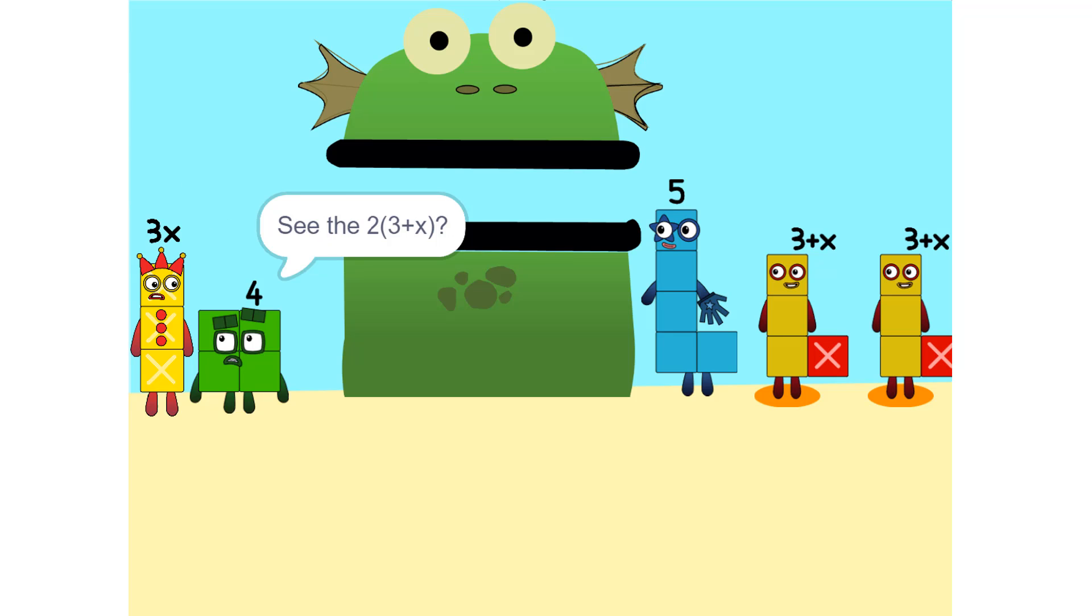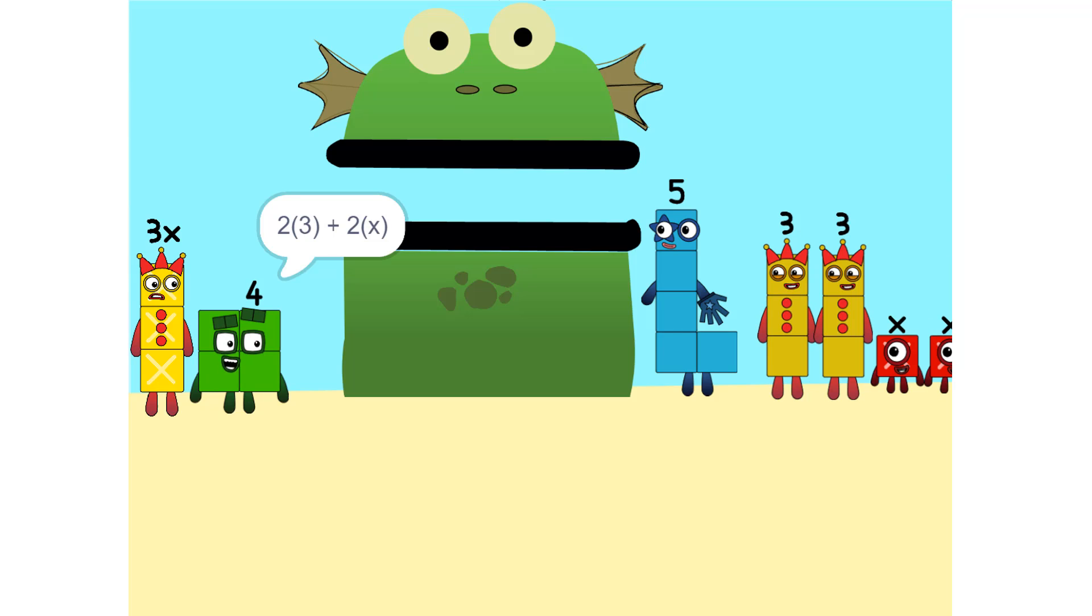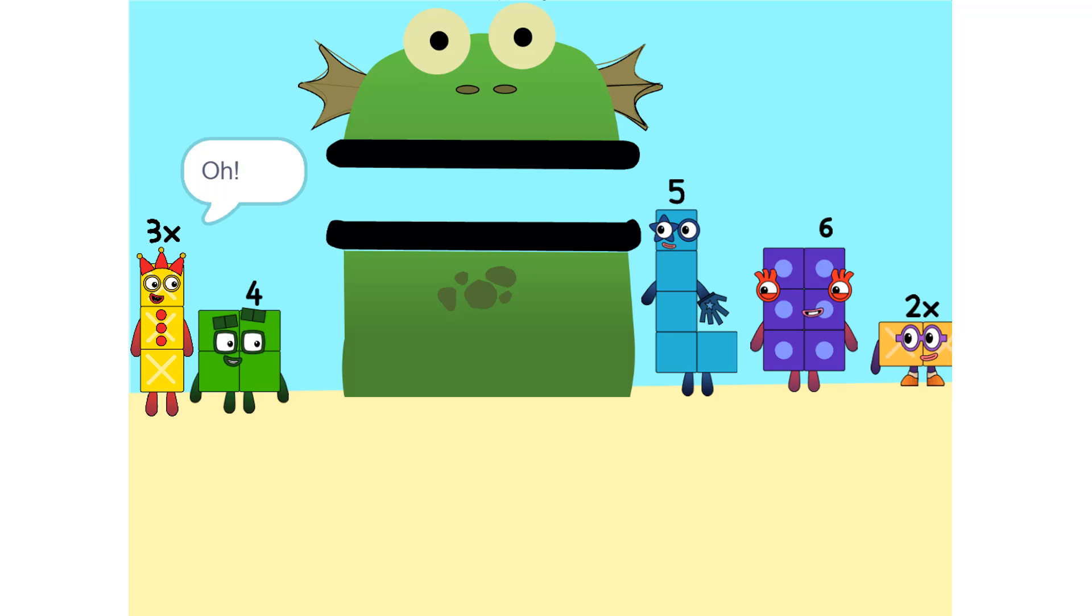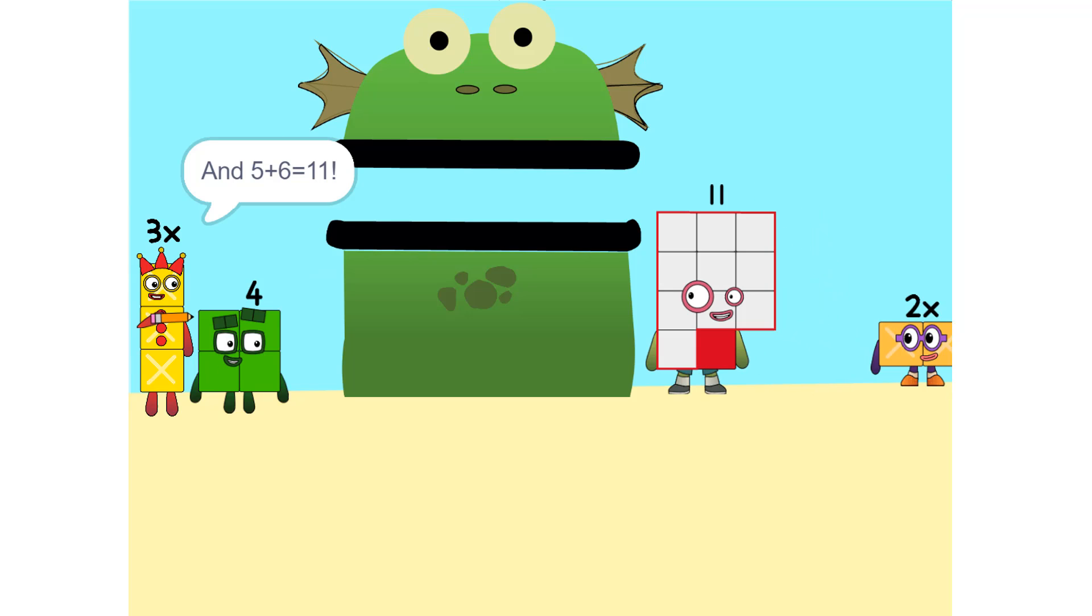Okay. See the 2 times 3 plus x? That's the same as 2 times 3 plus 2 times x, which is 6 plus 2x. Oh. And 5 plus 6 is 11.